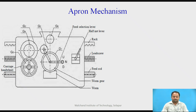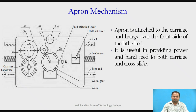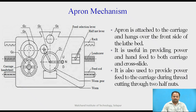Apron mechanism. This mechanism is situated inside the carriage; the housing of that particular mechanism is called the apron, and whatever mechanism is located inside is called the apron mechanism. The apron is attached to the carriage and hangs over the front side of the lathe bed. It is useful in providing power and hand feed to both the carriage and cross slide. It is also used to provide power feed to the carriage during thread cutting through two half nuts. The G6 gear provides the longitudinal feed to the carriage of the lathe machine.